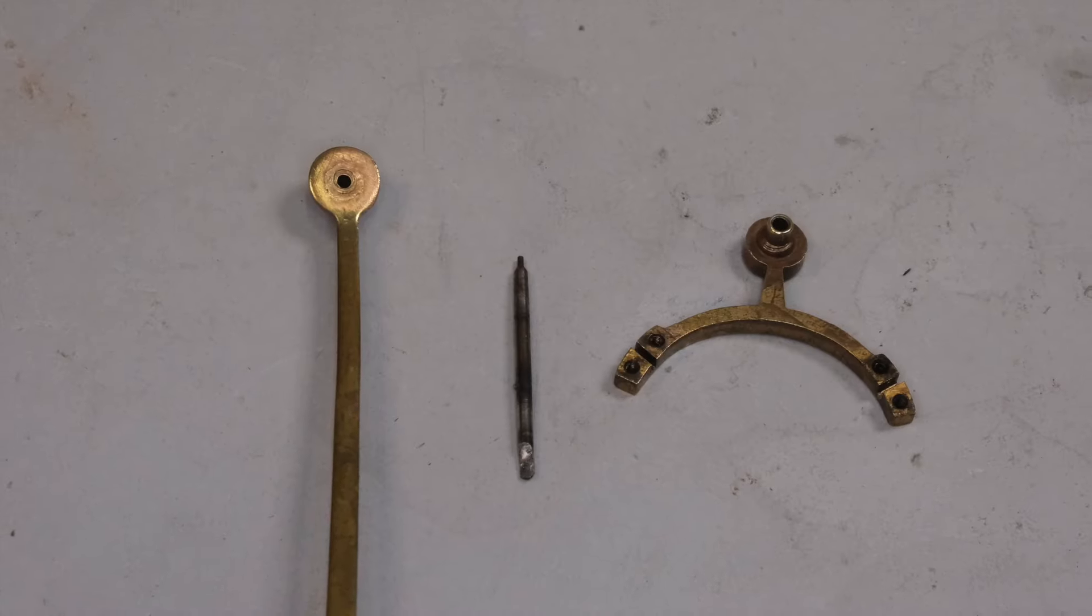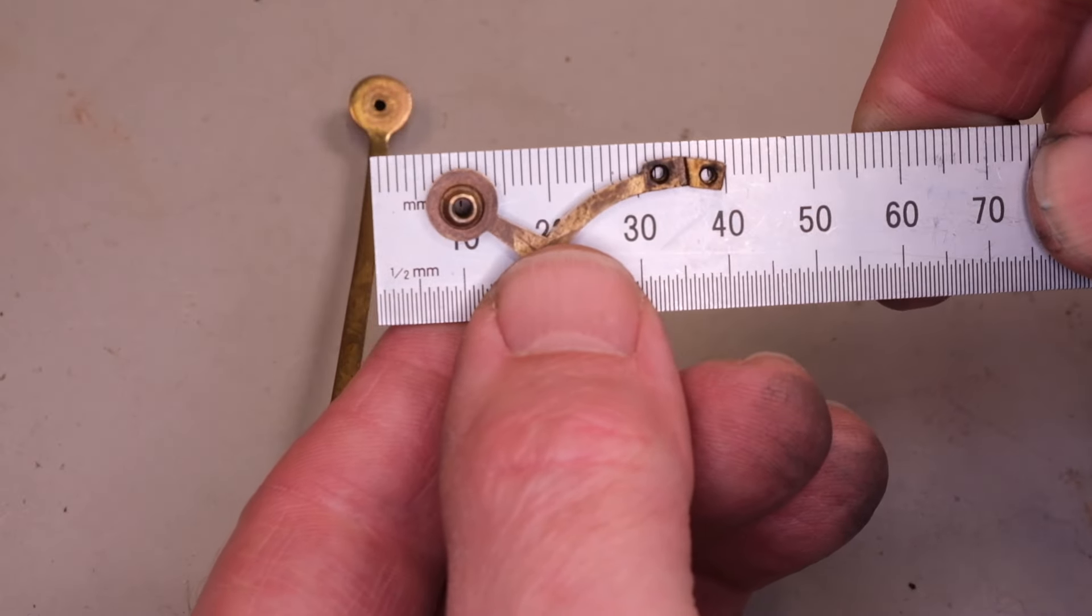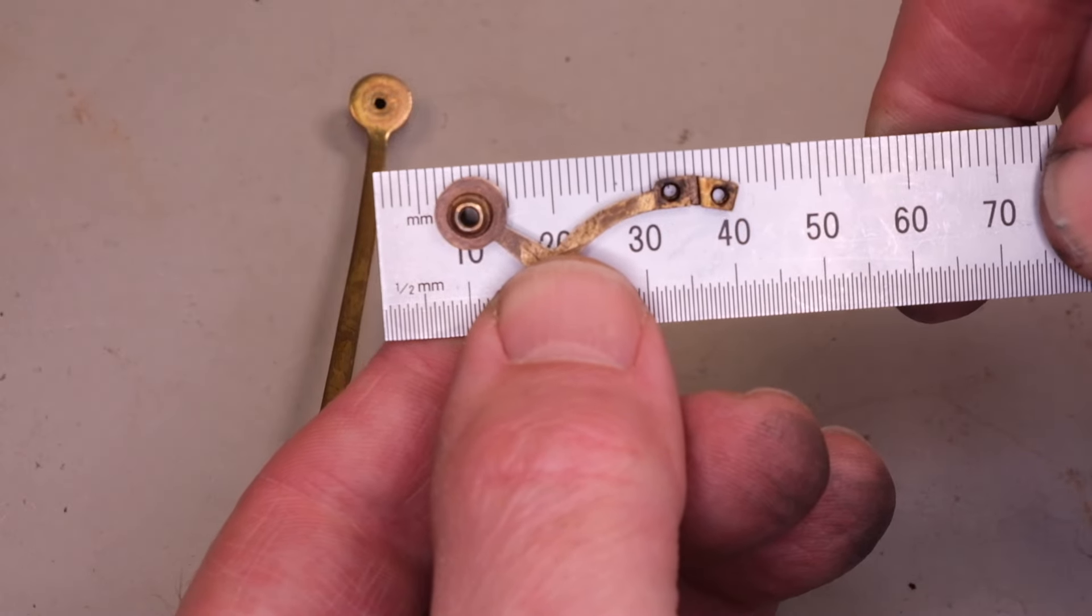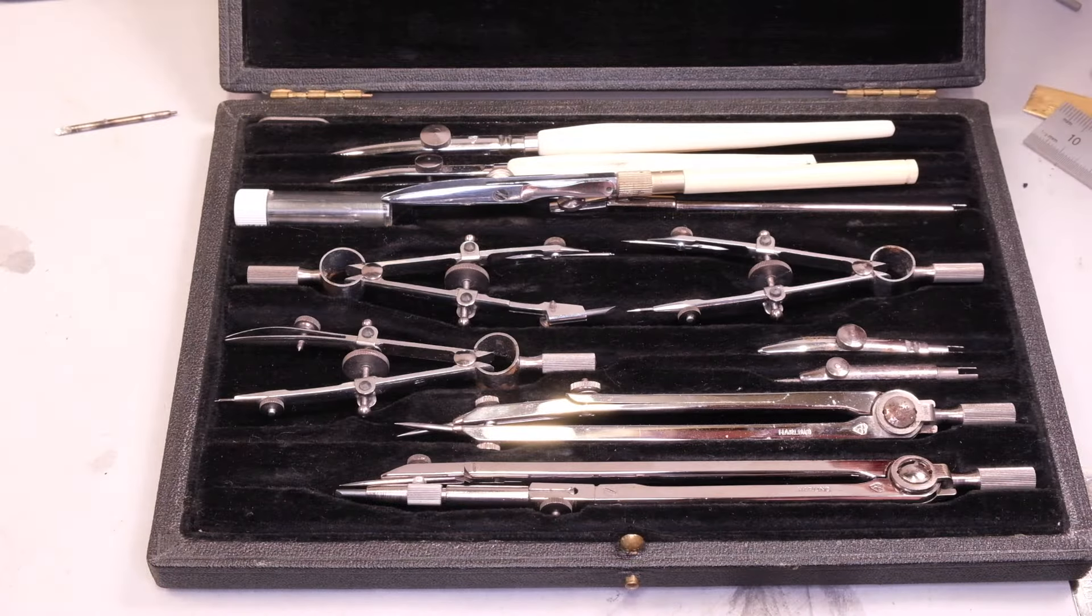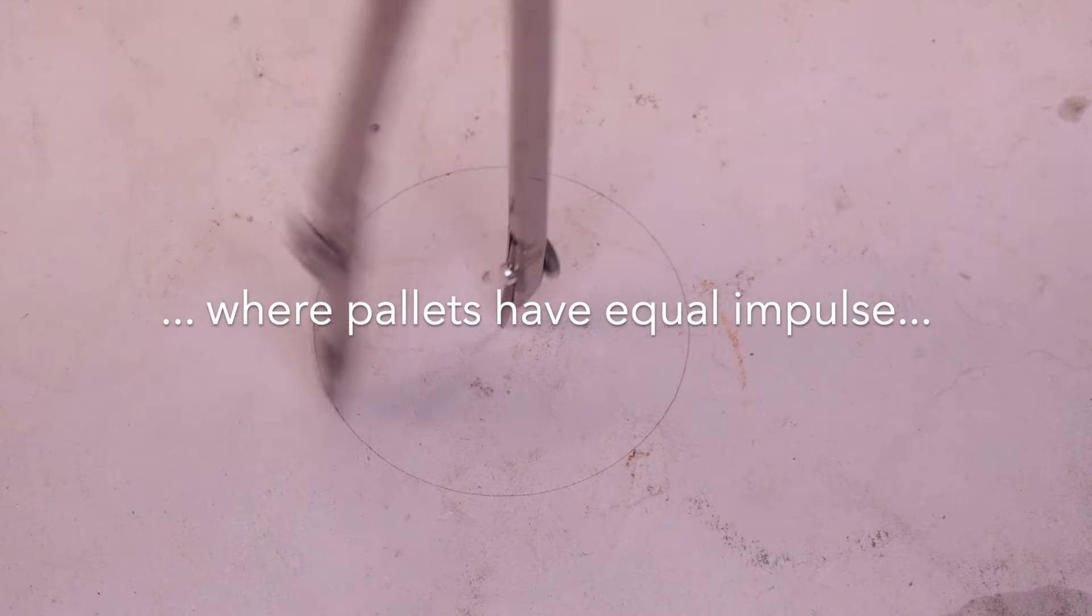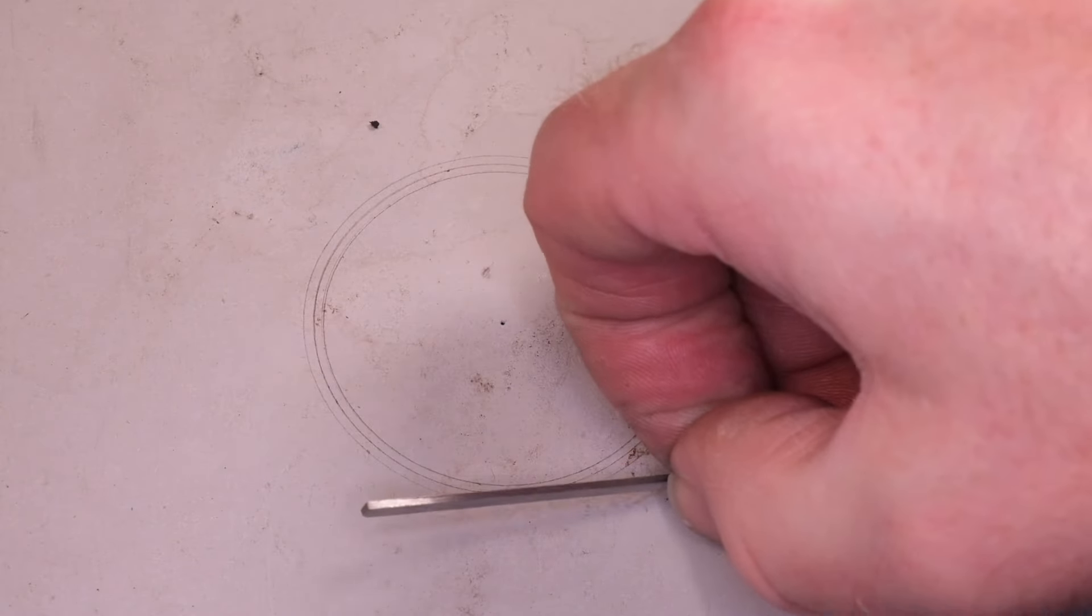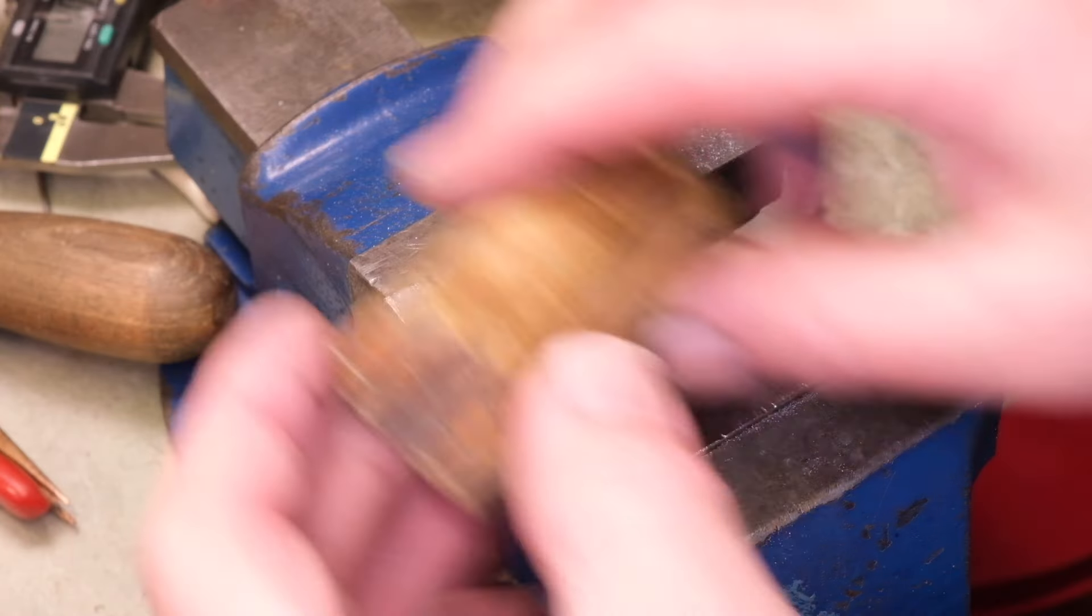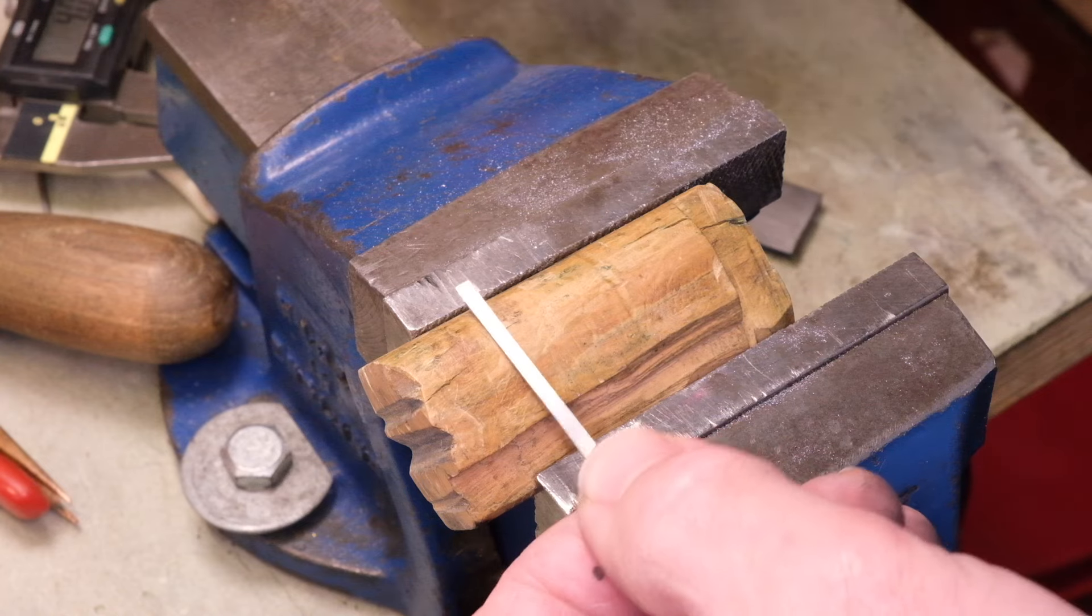And then I determine the radius at which the pallet should be made. So remember we've got two radii here, we've got the radius of the dead face or the locking face for the exit pallet and we have the radius for the dead face for the entry pallet. Once I've determined that I just draw those two radii on a bit of paper which just happens to be on my bench, and then I'm going to bend my piece of material which I've cut nice and long to shape to fit that curve.